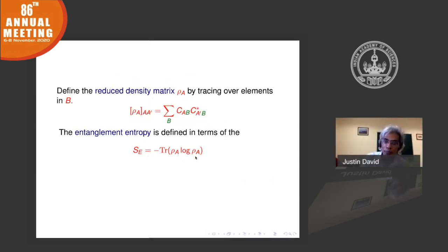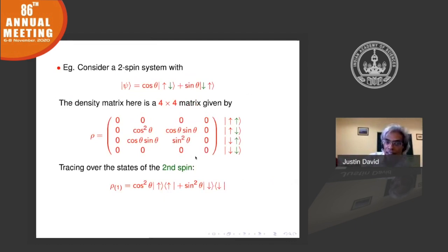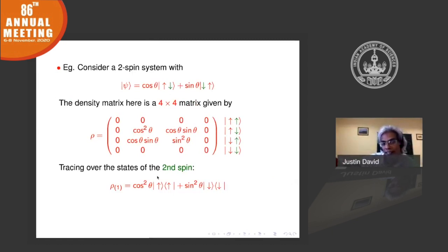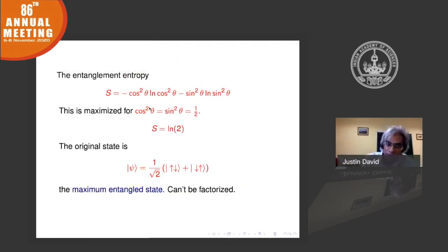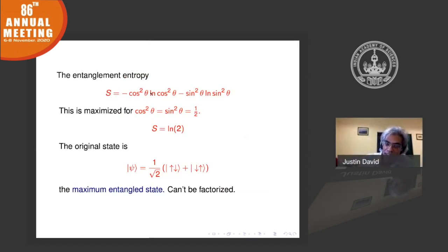Let me go over the two-spin example further. Consider a linear combination of |up,down⟩ and |down,up⟩. If you construct the density matrix, you get a four-by-four matrix. Tracing over the second spin gives the reduced density matrix for the first spin. The entanglement entropy is maximized when the original state is (|up,down⟩ + |down,up⟩)/√2 — the maximally entangled state — which cannot be factorized. That is where the name comes from.